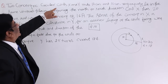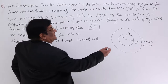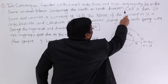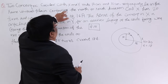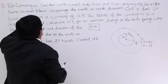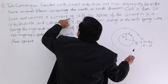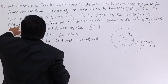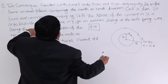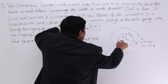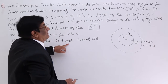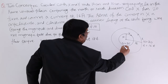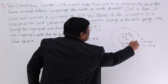The question says there are 2 concentric circular coils X and Y with radii 16 cm and 10 cm respectively, lying in the same vertical plane containing the north-to-south direction. Coil X has 20 turns carrying a current of 16 ampere, with the sense of current anti-clockwise. Coil Y has 25 turns with a current of 18 ampere, and the sense of current is clockwise.